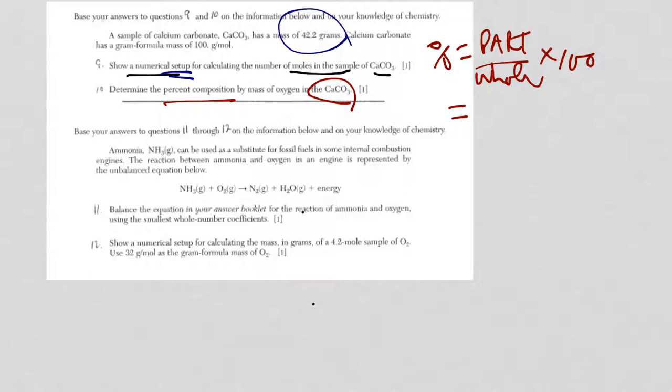It's the oxygen. It's O3, so you have to account for oxygen three times. It's 16 (the gram formula mass for oxygen) times 3, divided by the whole thing. They gave you the gram formula mass of 100 times 100.